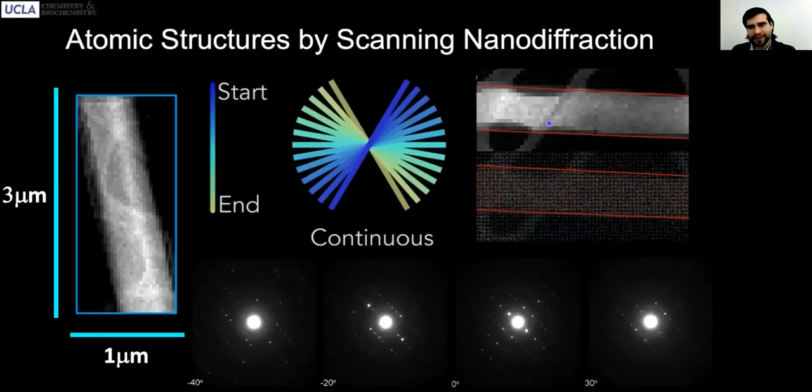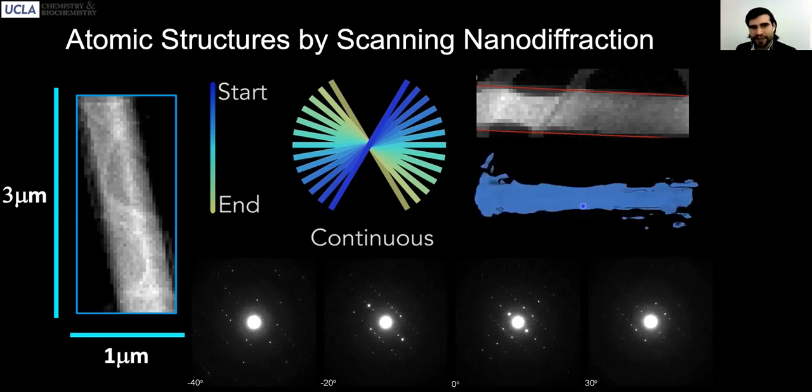This information can then be digitally combined to yield a full tilt series set of diffraction patterns from a digitally defined region of a nanocrystal. Because the beam is raster scanning across the sample, you can actually, after the fact, decide what patterns you want to keep.